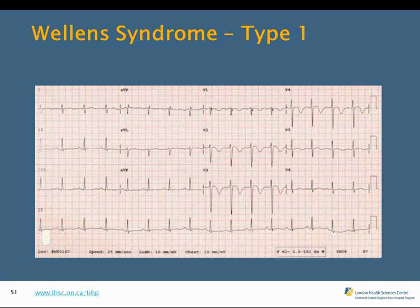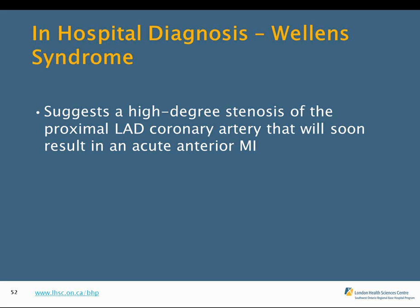There are two types of Wellens syndrome: Type 1 (most common) shows deep inverted T waves in V1–V4, and Type 2 shows biphasic T waves. Wellens syndrome indicates critical stenosis of the proximal left anterior descending (LAD) coronary artery — often 95% or more. The LAD is known as the 'Widowmaker' because abrupt complete occlusion can cause a massive anterior wall MI and sudden death. The mean time before these patients develop an MI is approximately eight days. Approximately 75% will develop an acute anterior MI within one week without intervention. These patients need urgent catheterization, typically within 12 to 24 hours.